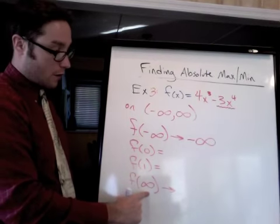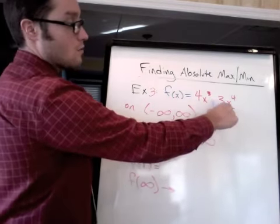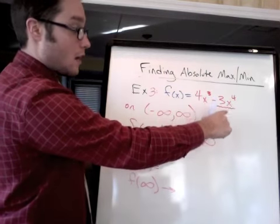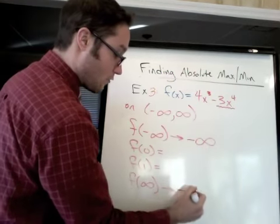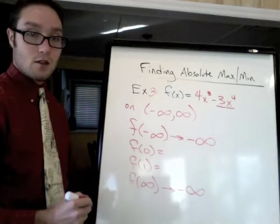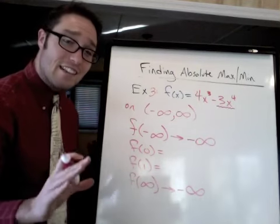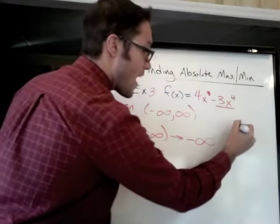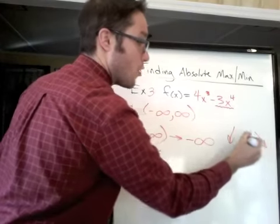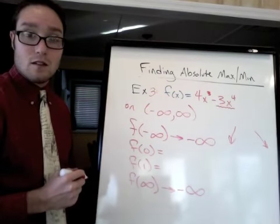Let me do the other limit since I'm in limit mode. If I plug in positive infinity, raise it to the 4th, and then multiply by negative 3, I'm getting negative infinity. Those are my two limits. So what that tells me is that the graph is going down on both sides. I don't know what happens in the middle.